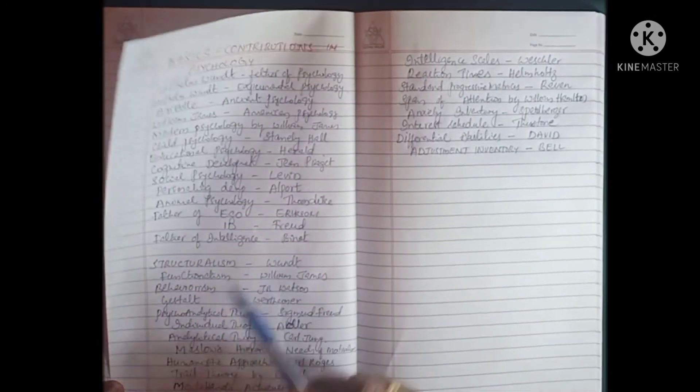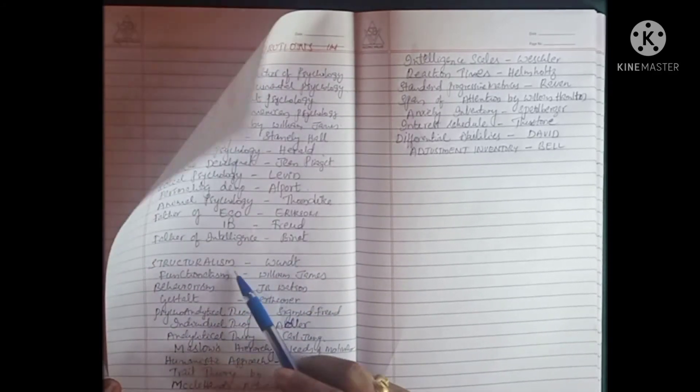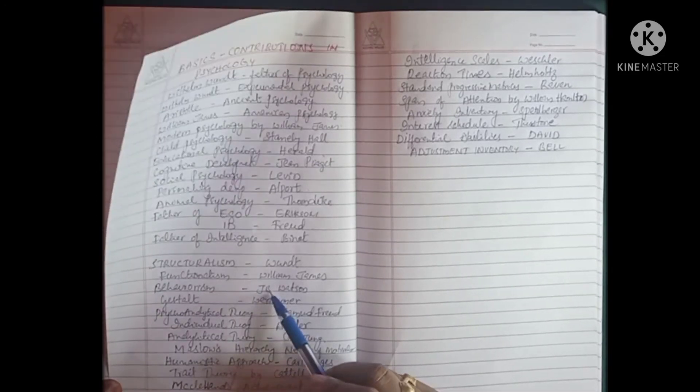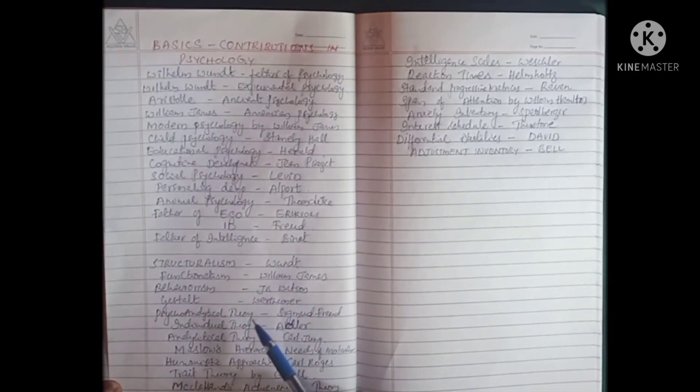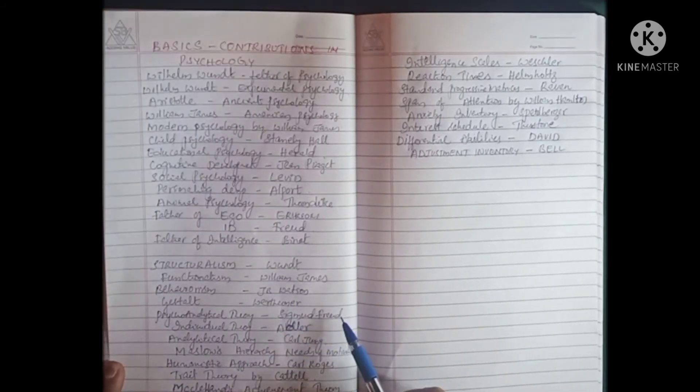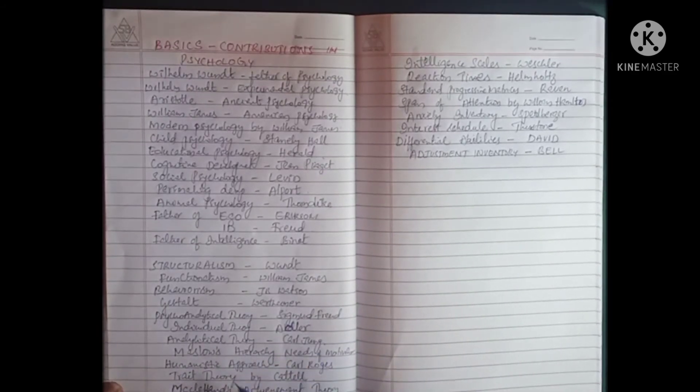Schools of psychology: Structuralism by Wundt, Functionalism by William James, Behaviorism by J.B. Watson, Gestalt by Wertheimer, Psychoanalytical theory by Sigmund Freud, Individual theory by Adler, Analytical theory by Carl Jung.